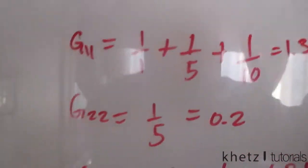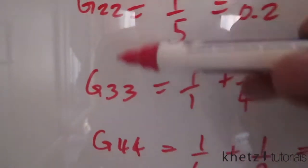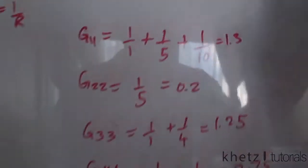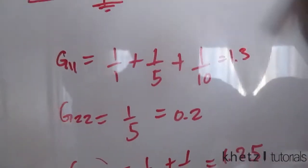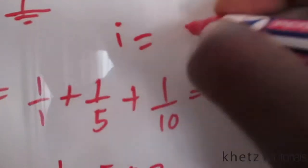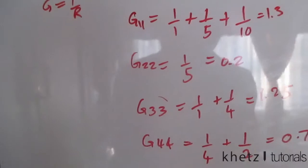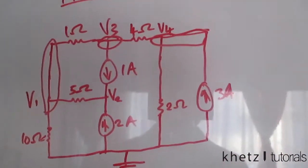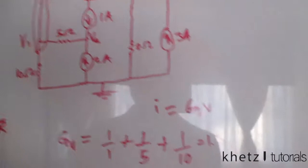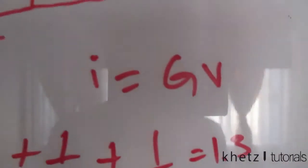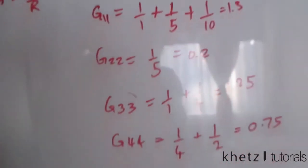Looking at the subscripts, they represent positions in a matrix. Ultimately we'll have a conductance matrix satisfying I = GV — the node voltage equation format — where each coefficient occupies its corresponding row and column position.